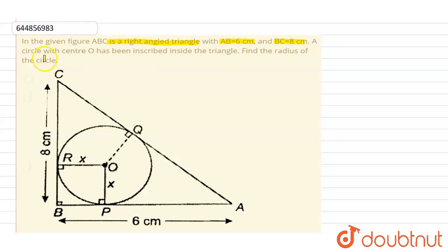Now see, this circle with center O is inscribed inside the triangle. Therefore we can say that this is the incircle of this triangle ABC. Now it is given that ABC is a right angle triangle.